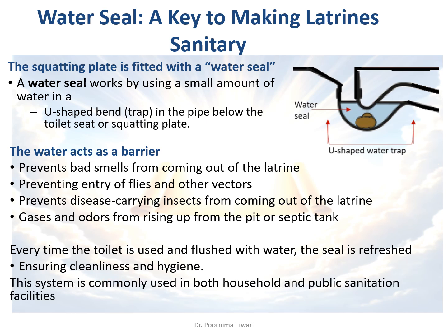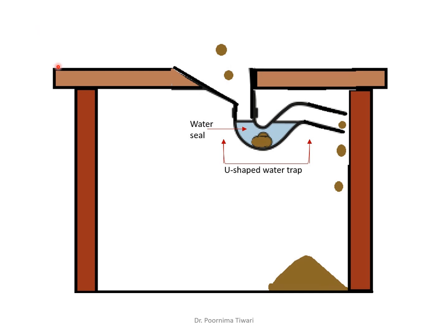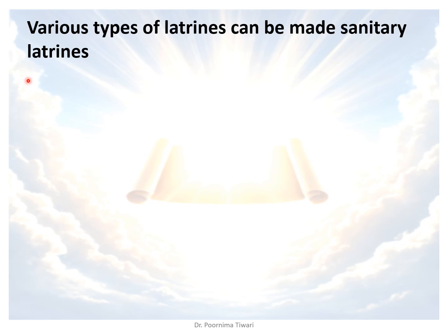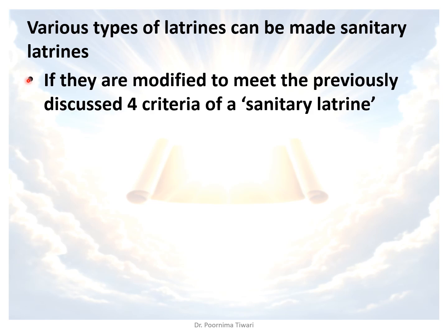This water seal system is commonly used in both household latrines and public sanitation facilities. You can see clearly in this diagram: this is the squatting plate, this is the toilet seat, and this is the U-shaped pipe known as the trap. By virtue of this design, when you flush the toilet, some water always remains in the U-shaped pipe — this remaining water is called the water seal. Various types of latrines will be covered in another lecture, and all of them can be made sanitary if modified to meet the four criteria discussed.